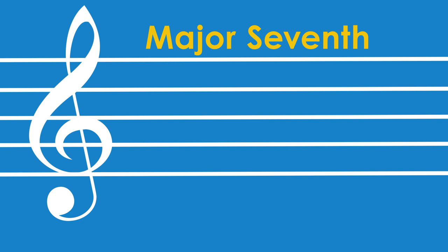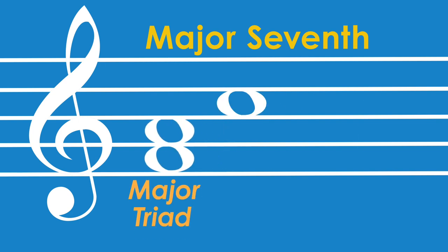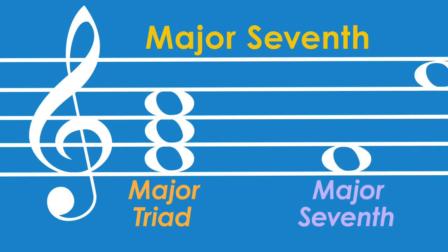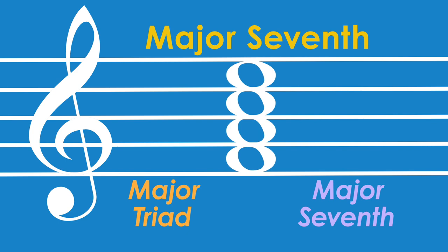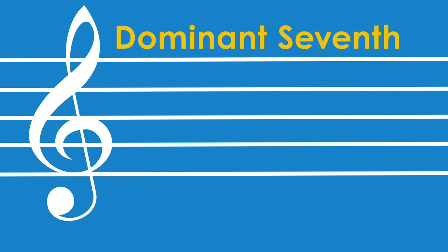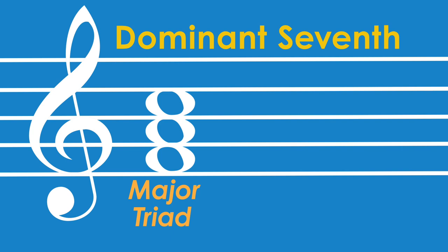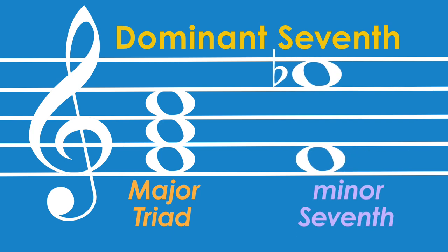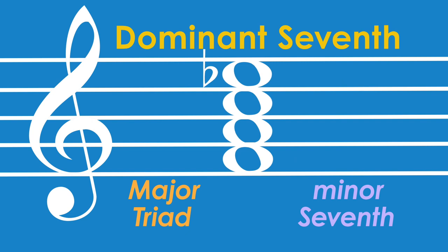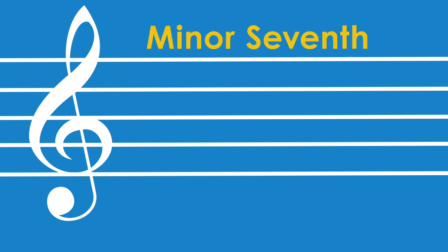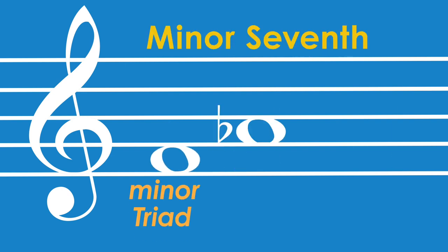The first one is called a major seventh. It's made of a major triad and a major seventh. The second one is called a dominant seventh. It's made of a major triad and a minor seventh. The third one is called a minor seventh. It's made of a minor triad and a minor seventh.